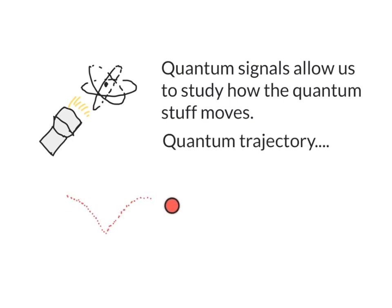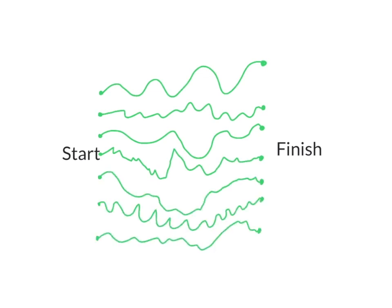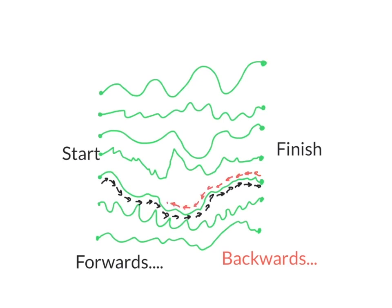Similar to the situation of a ball bouncing on the floor, it moves from a start to a finish in the same way that quantum trajectories also move from some start to a finish. We can look at these trajectories both forwards and backwards and we can study which way looks strange or normal.